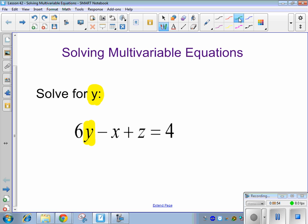So what do I have to do to get rid of my other stuff for this particular equation? You have to add x and subtract z. Perfect. So I have a minus x and I have a plus z, so I want to reverse both of those operations. So that would be a plus x and a minus z.